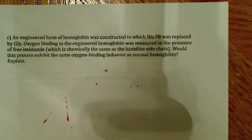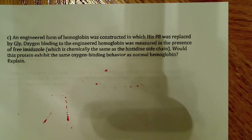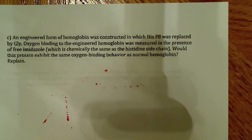An engineered form of hemoglobin was constructed in which histidine F8 was replaced by glycine. We're already changing an amino acid — histidine is going to glycine — and that's going to be different because histidine is polar and glycine is not, and glycine is much smaller as well. Oxygen binding to the engineered hemoglobin was measured in the presence of free imidazole, which is chemically the same as the histidine side chain. Would the protein exhibit the same oxygen-binding behavior as normal hemoglobin?